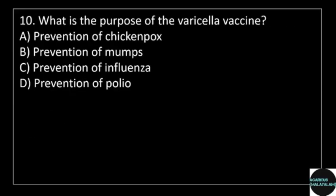10th question: What is the purpose of the varicella vaccine? Answer options: option A, prevention of chickenpox; option B, prevention of mumps; option C, prevention of influenza; option D, prevention of polio.